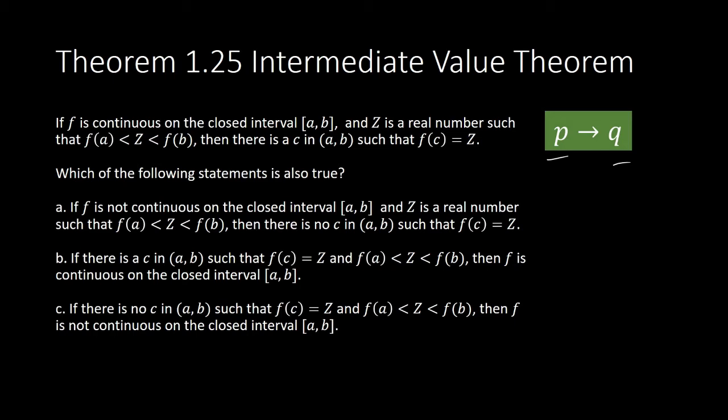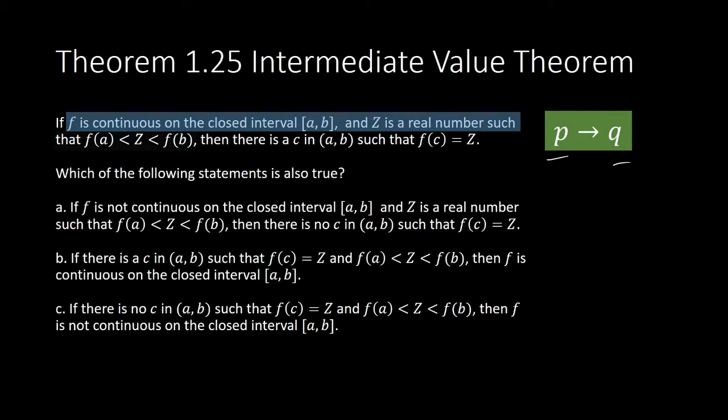So in our theorem, which is the antecedent? This is the antecedent: f is continuous on the closed interval, and Z is a real number such that capital Z is between f(a) and f(b). That is your antecedent, that is p. What is the consequent?